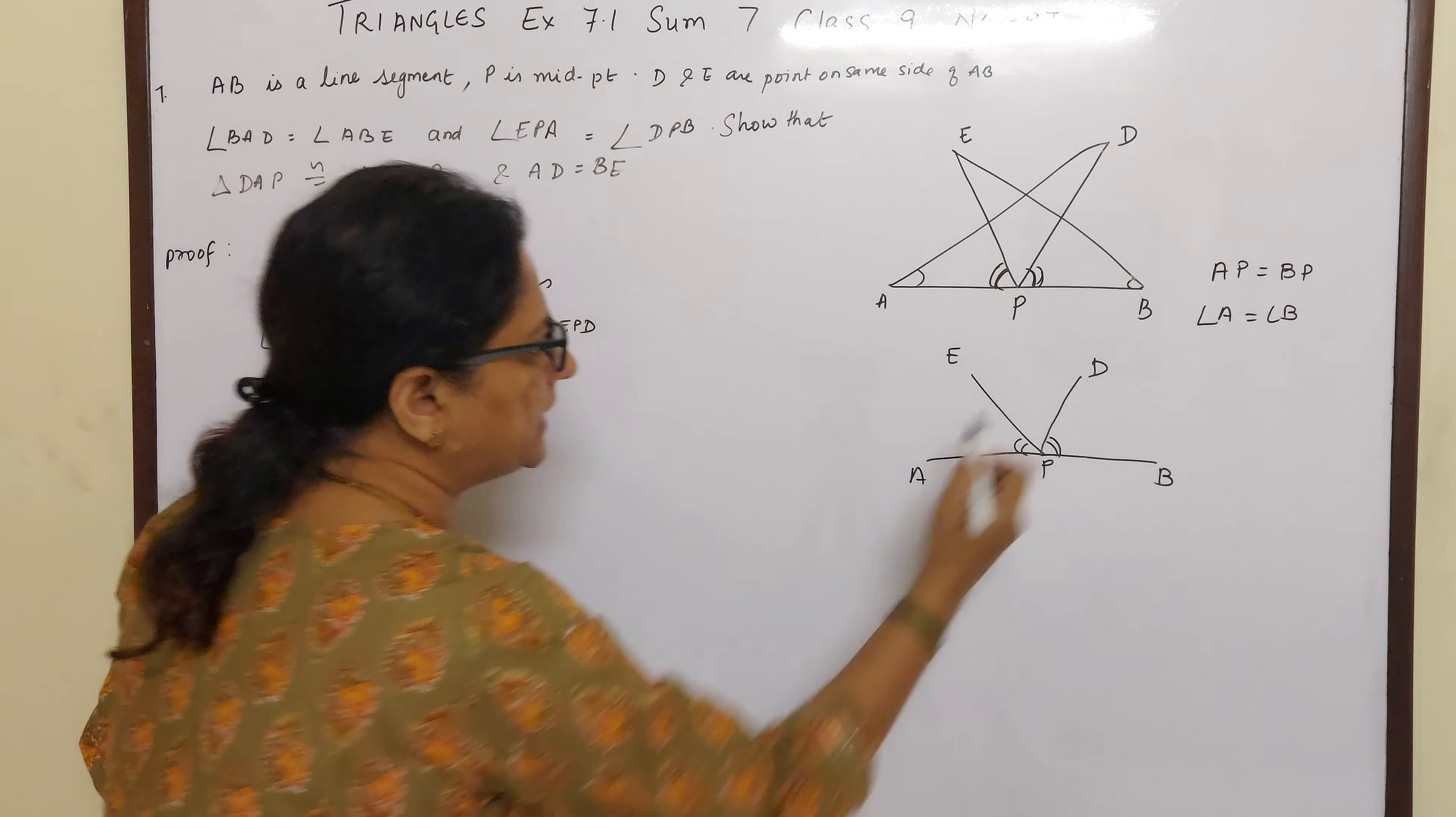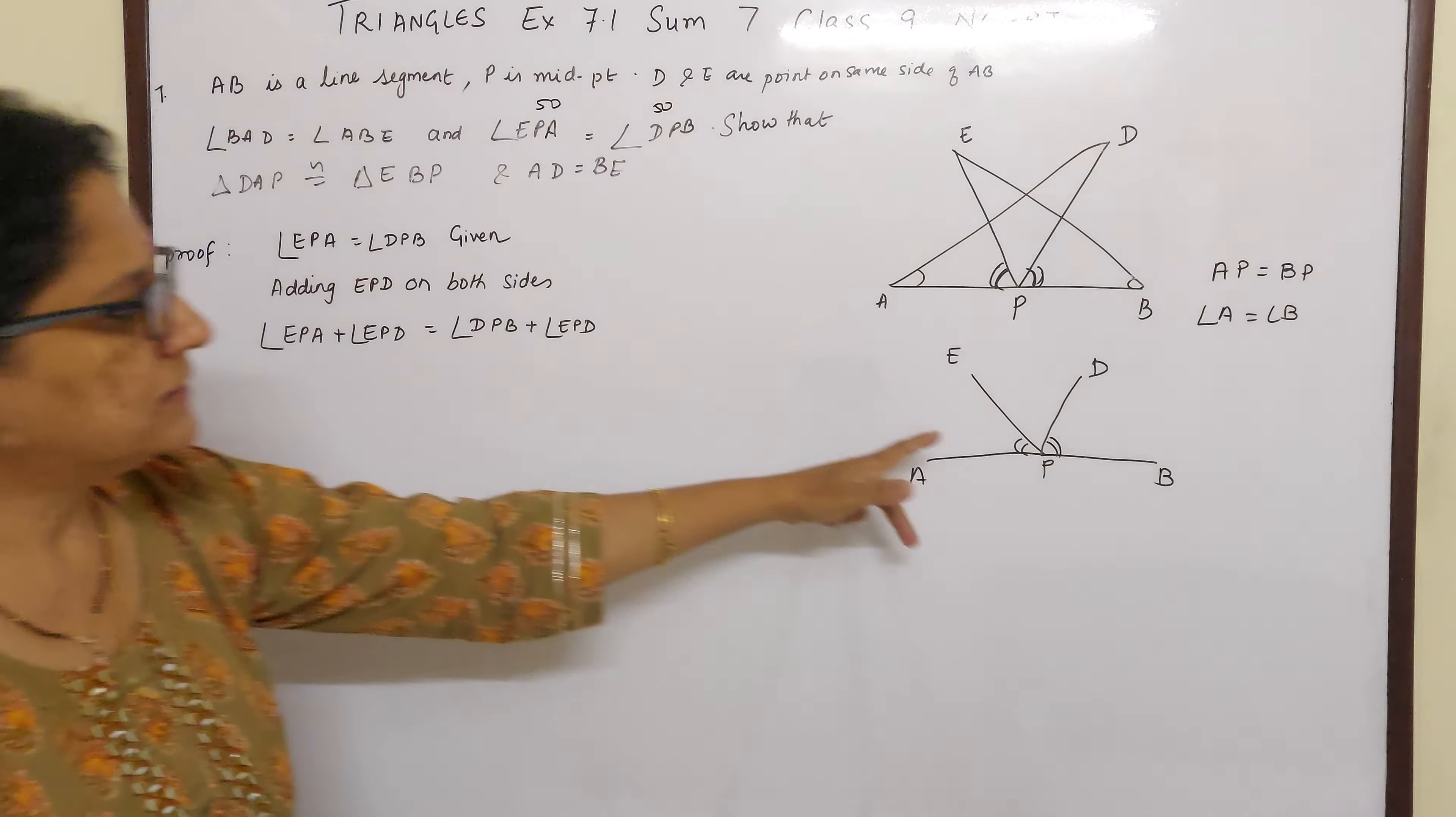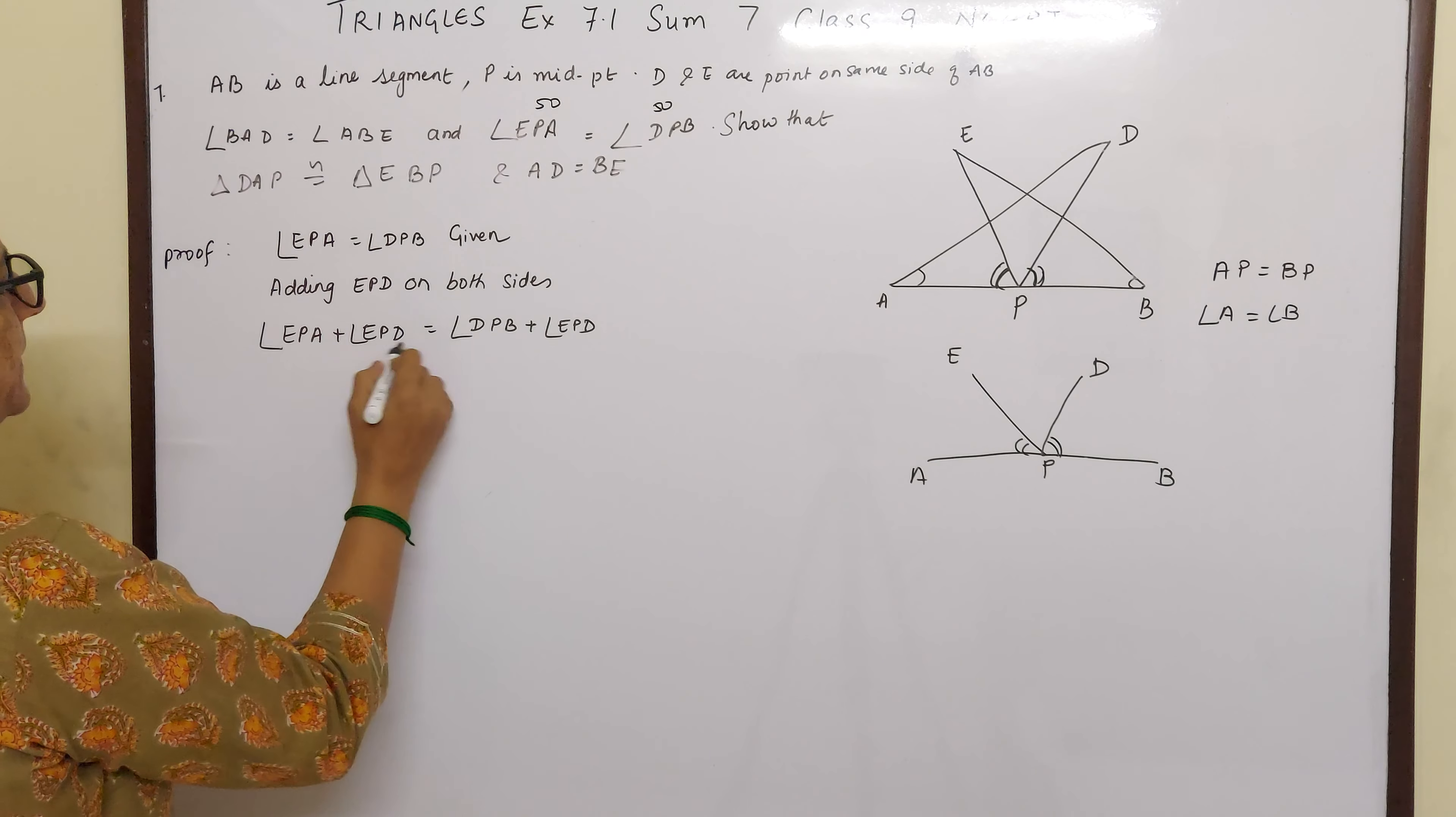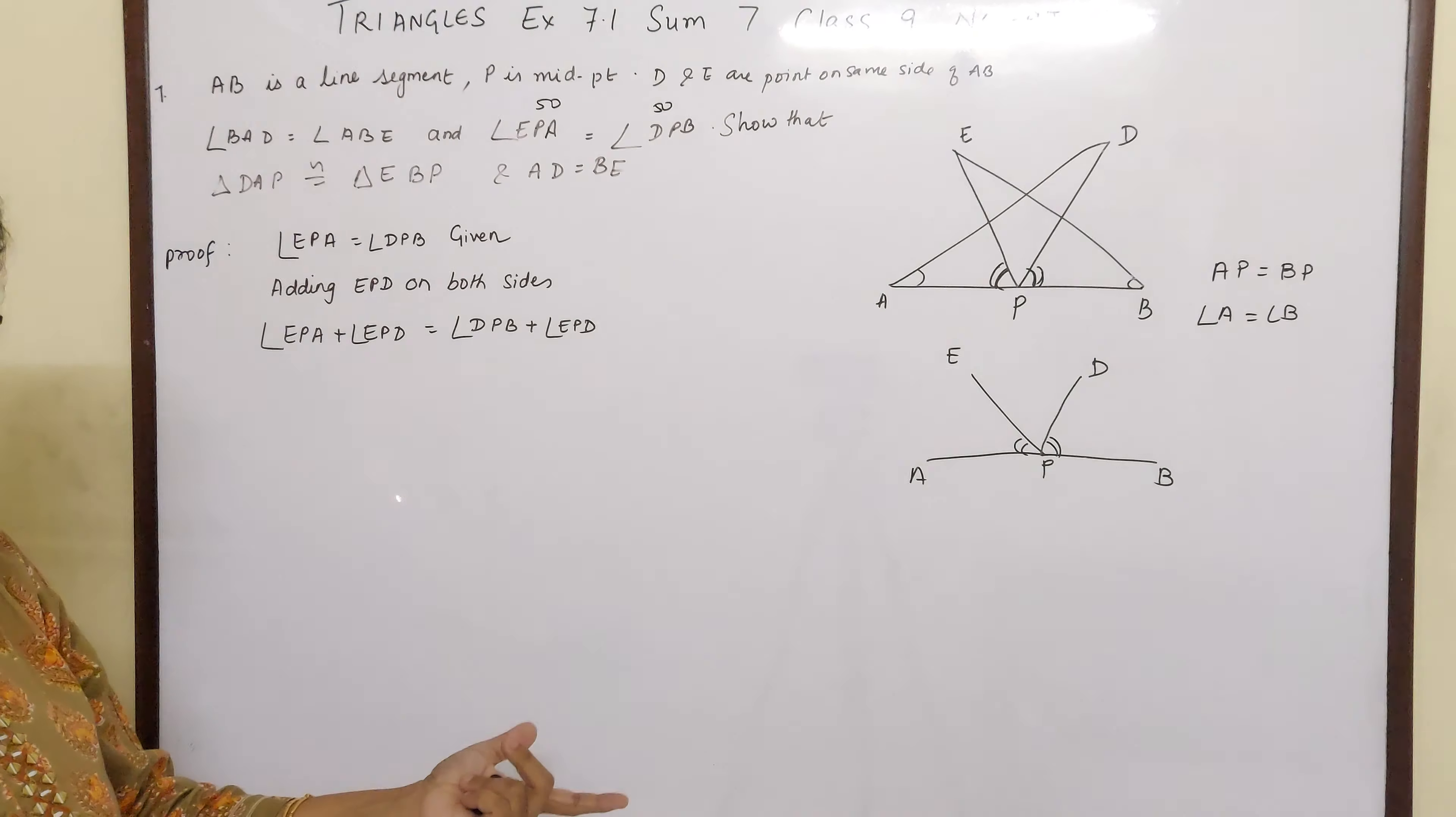EPA is equal to DPB. Now I am adding EPD to both the sides. Suppose children, EPA is equal to DPB. Suppose let them be 50 degrees. If both are 50, 50, then this becomes 100. And then it is a linear pair, so this should be 80. So if this is 80, I am adding EPD 80 to both the sides. This will also become 80 plus 50, 130. This will also become 80 plus 50, 130. So whenever, whatever angles I get, they will be of equal measures.